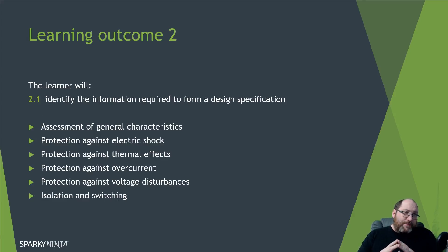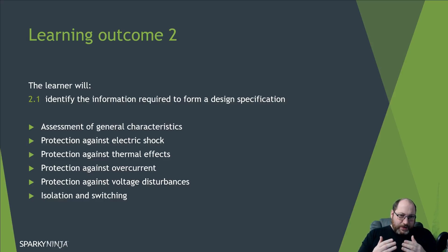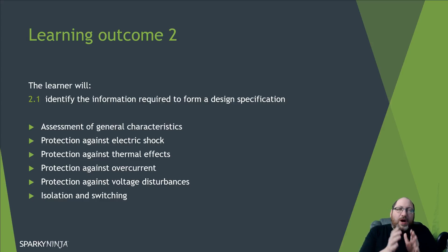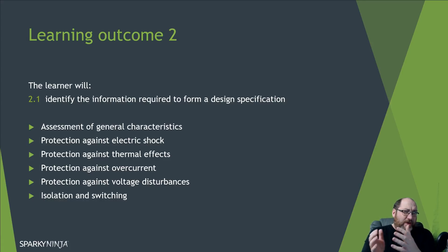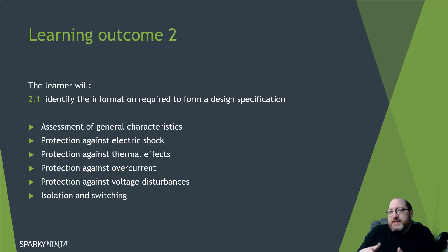The first pass outcome is to identify the information required to form a design spec. The way I train it is to think about the design process when you go through the wiring regulations. You've got part one — scope, object, and fundamental principles — which tells you if the book is relevant. Part two is definitions. From that point it's a design process: part three is assessment of general characteristics, covering supply characteristics, division of installation, compatibility, and maintainability.